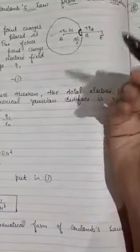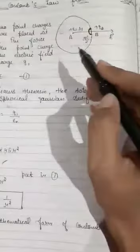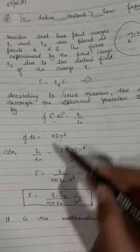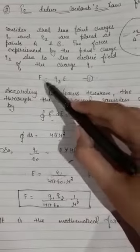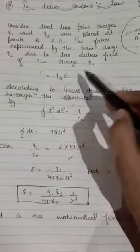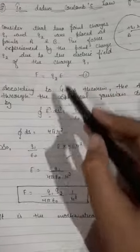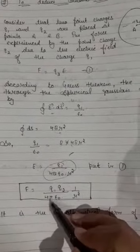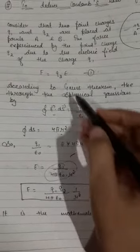So we know the formula for force also. Earlier also we have written that is F = q2*E. In the place of E, I have substituted the whole value, that is my q1/(4πε₀r²), and other thing q2 I have from equation 1.